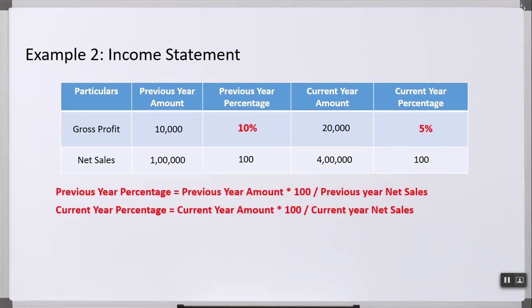So gross profit in the previous year was 10% of net sales, whereas in the current year it is only 5% of net sales. To summarize the formula: percentage = amount × 100 ÷ net sales amount. This common size analysis can be used for two companies, two years, or even just one year — for example, to find out how much your profit or expenses are as a percentage of net sales.